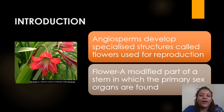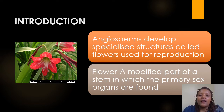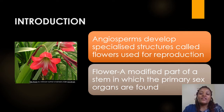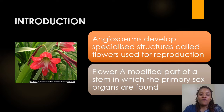I'm sure that all of you have gone through the topic of classification, and you know what angiosperms are. Angiosperms develop specialized structures called flowers. These flowers are used for reproduction. A flower is a modified part of a stem in which the primary sex organs are found.